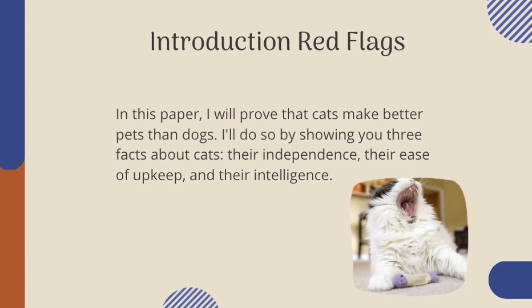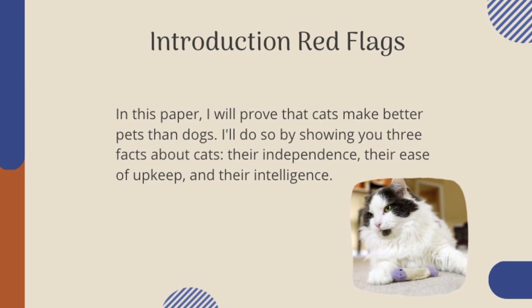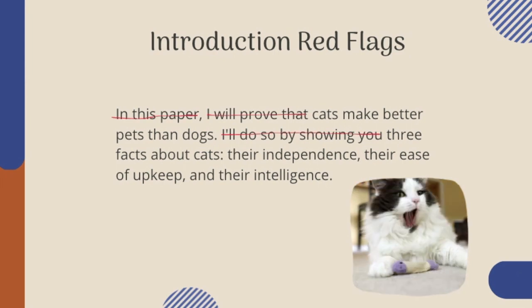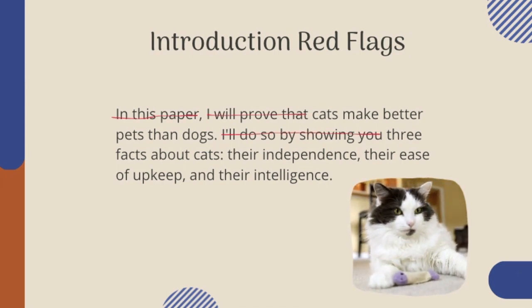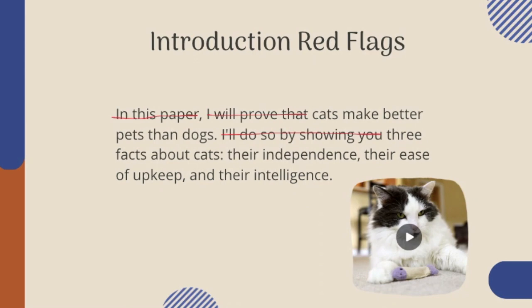Here is an example of an introduction that has some of those red flags: 'In this paper, I will prove that cats make better pets than dogs. I'll do so by showing you three facts about cats: their independence, their ease of upkeep, and their intelligence.' What's wrong with this introduction? Well, it's really self-reflexive about the fact that I am writing a paper. If I go through and cross out the lines that are about what I'm going to do, you can see it's just not very interesting to say 'in this paper, I will prove that' or 'I'll do so by showing you.'